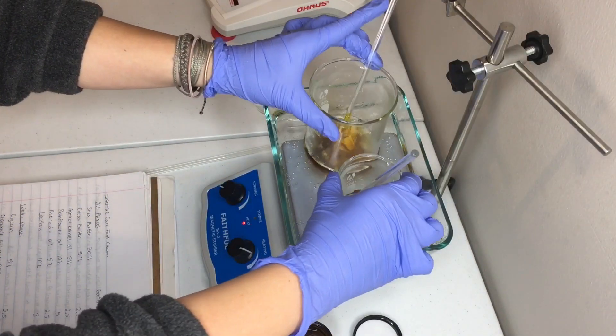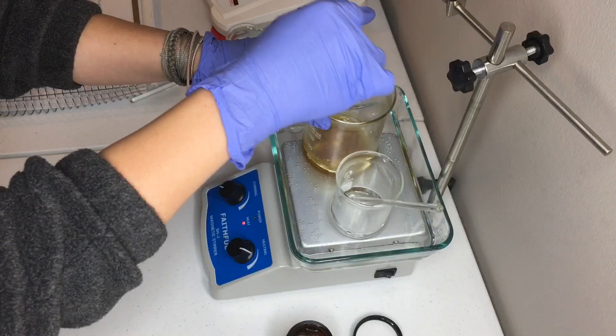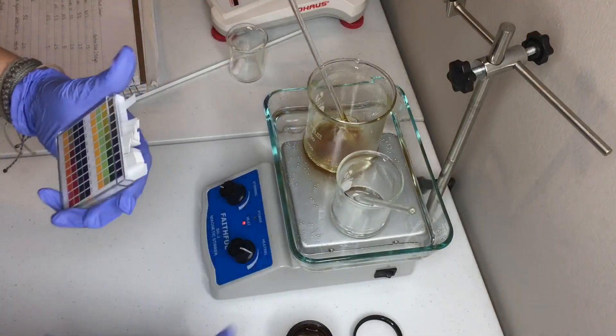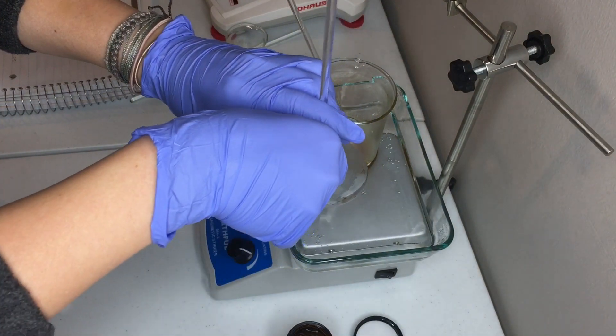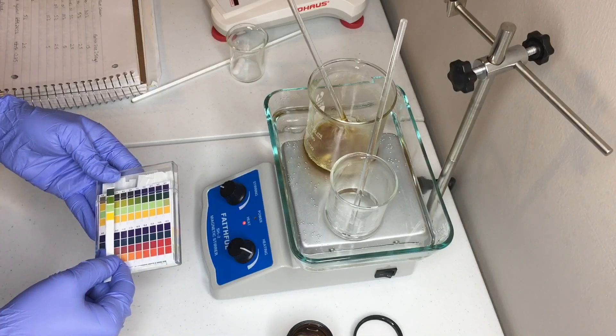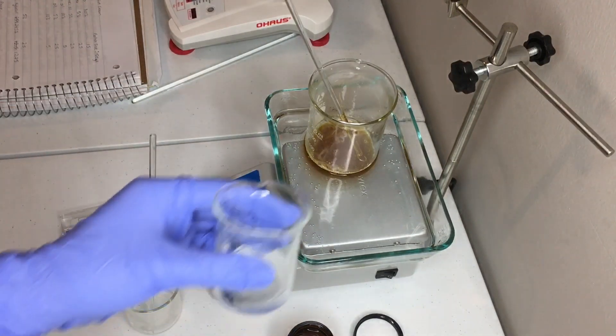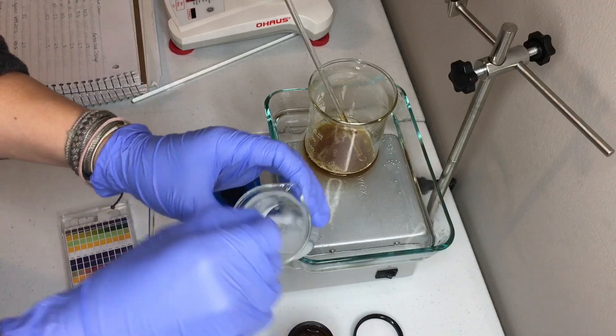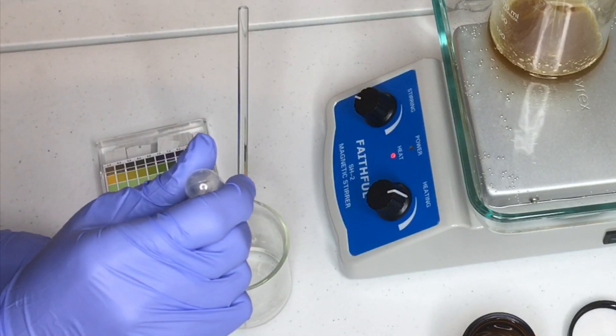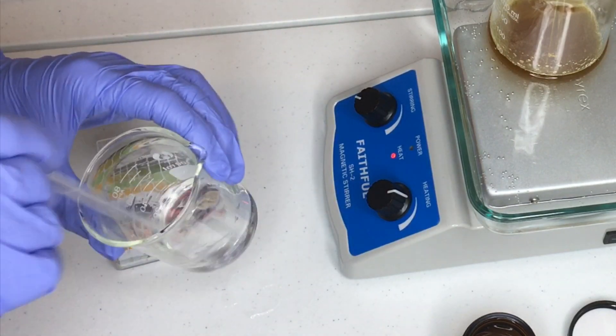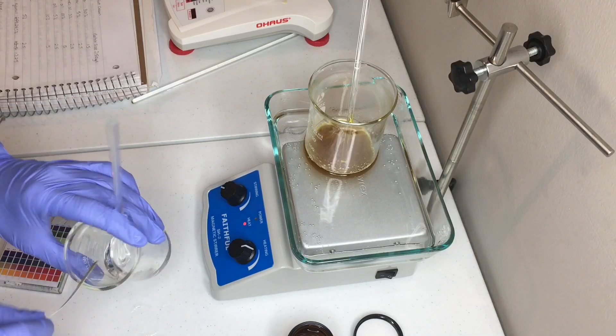So now I'm going to go ahead and start heating the oil phase and the water phase up in the water bath. And these are in separate beakers and we're going to heat them up to 70 degrees Celsius. And right now I'm checking the pH of the water phase and it needs to be adjusted so I am making a citric acid 10% solution and putting it into the water phase. Now I'm going to check the pH again and see where we're at.